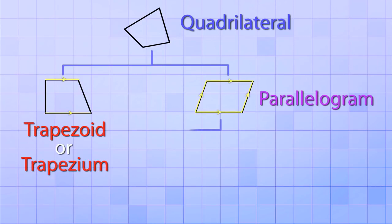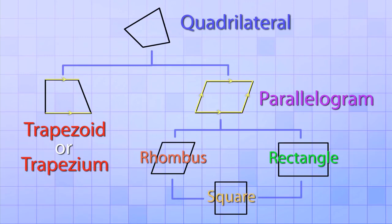And you've already seen that there are several types of parallelograms, called rectangles, rhombuses, and squares. Alright, so that's the basics of classifying quadrilaterals. And there's a few other special types of quadrilaterals, but we've learned the most important ones.